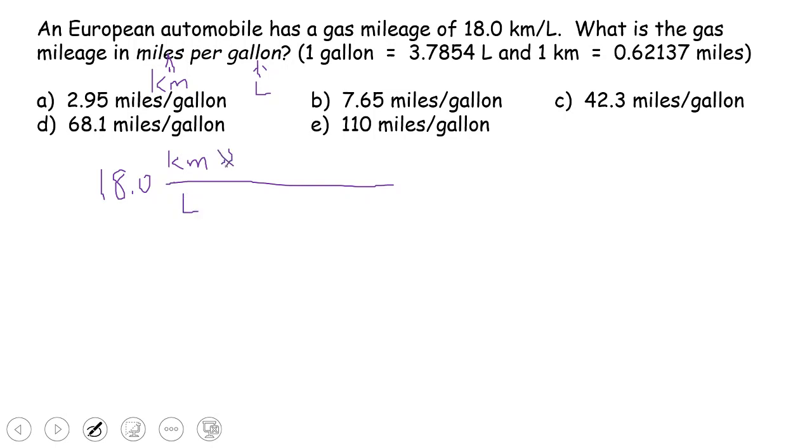we are going to convert from kilometers, put on bottom, onto miles using this relationship. One kilometer is equivalent to 0.62137 miles. This way, kilometers, kilometers are gone.